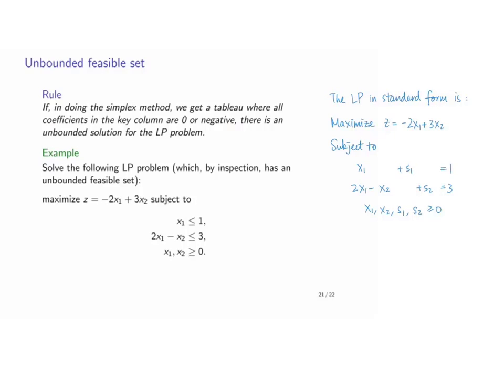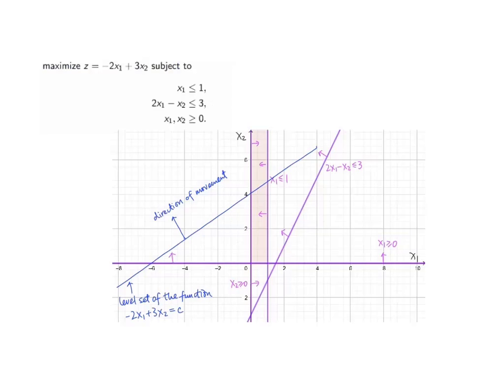Let's proceed to the example on page 21. If we use the graphical method to tackle this problem, we will see that the feasible set is unbounded.